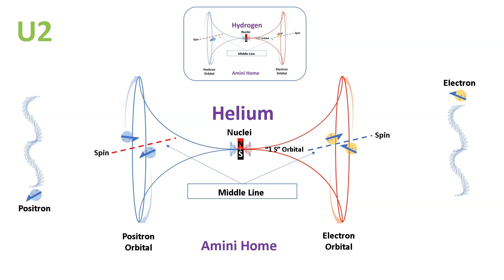These two opposing rotational spaces are connected through the nucleus at their midpoint, which I will refer to as the Amini home for the sake of conversation. However, it's crucial to note that each orbital can only hold a maximum of two electrons.